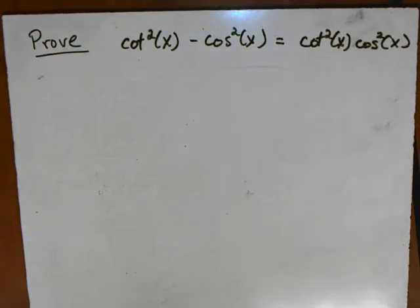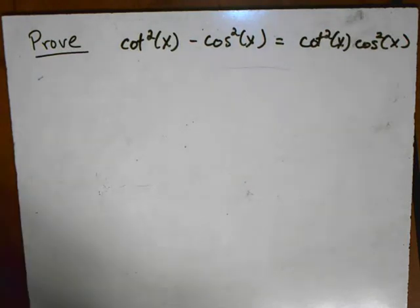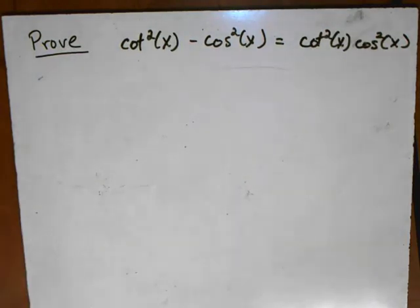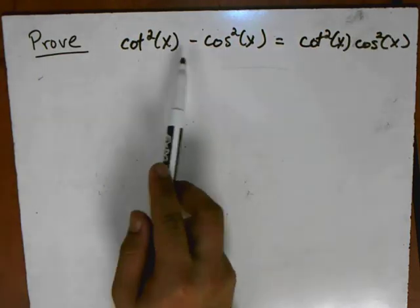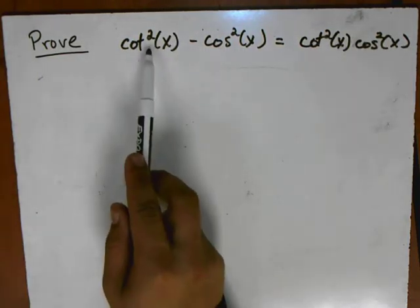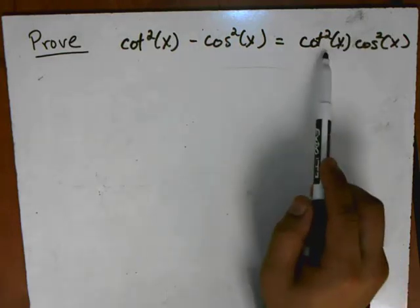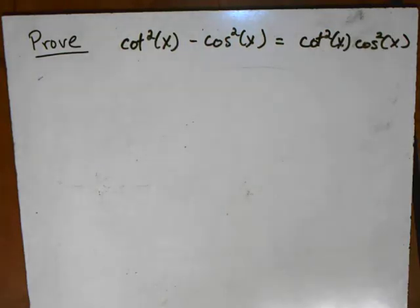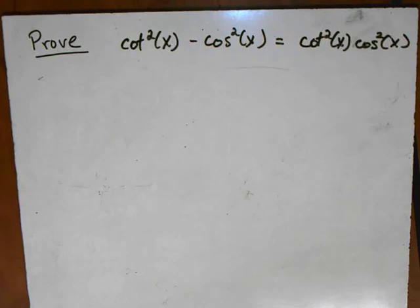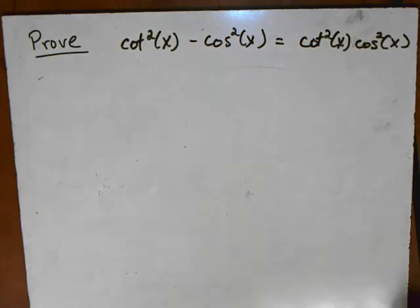Pre-calculus students, we continue our lesson on proofs of trigonometric functions, and we have another proof we're doing right now. This is proving that cotangent squared minus cosine squared is really the same thing as cotangent squared times cosine squared. With proofs, it's better to learn strategies and methods of proof so that we can apply them later. As you're watching this video, please pay attention to the methods and ideas that we're using here.